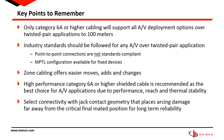So let's take a look through the key points for this presentation. First of all, only Category 6A or higher cabling will support all AV deployment options over the full 100 meters for twisted pair applications. Secondly, structured cabling industry standards should be followed for any AV over twisted pair application. As a reminder, point-to-point connections are not standards-compliant, but the MPTL or modular plug terminated link configuration is available for devices that are expected to be fixed and not relocated. For two-connector, three-connector, or MPTL configurations, zone cabling will provide a better platform to support moves, adds, and changes moving forward as it limits activity between the zone cabling enclosure and the end device.